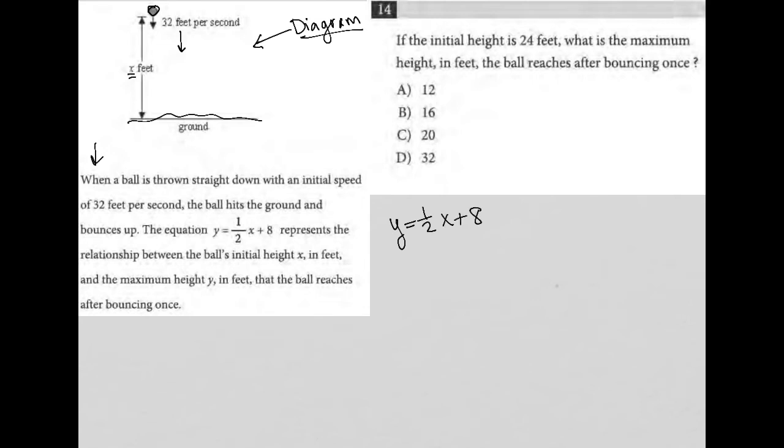So, the equation Y equals one-half X plus 8 represents the relationship between the ball's initial height, X, in feet, and the maximum height, Y, in feet that the ball reaches after bouncing once. Okay, that is good to know.